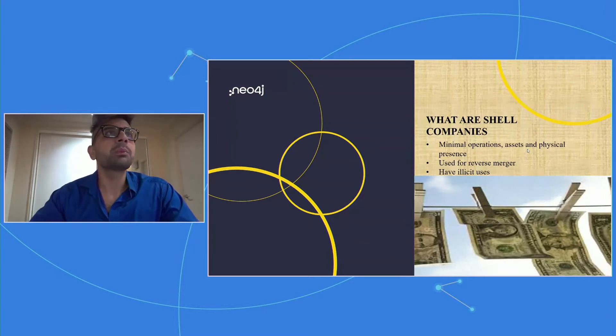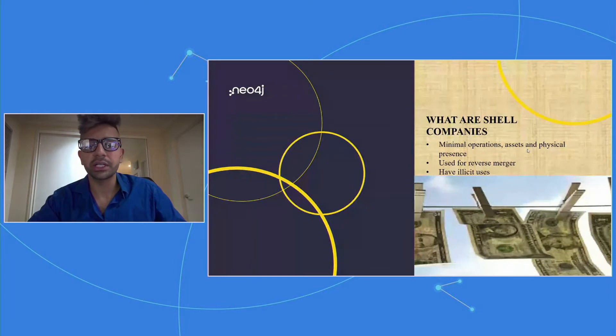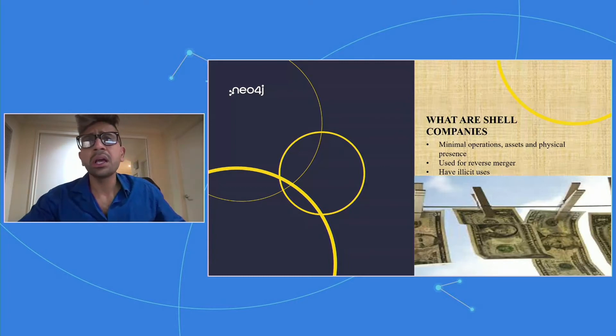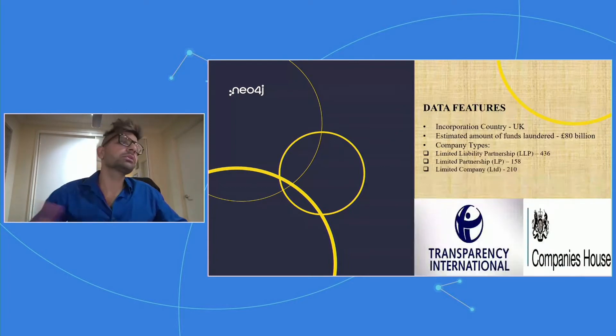Therefore it was important to at least propose a method to identify such entities. My hypothesis while undertaking my research was that these entities can be identified if we have analyzed entities which have already been accused or identified in money laundering cases. And my geographical location for conducting this research was UK.